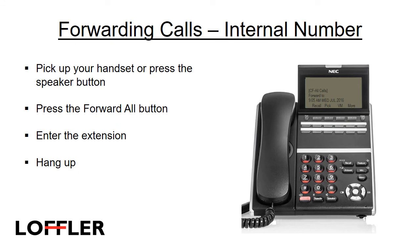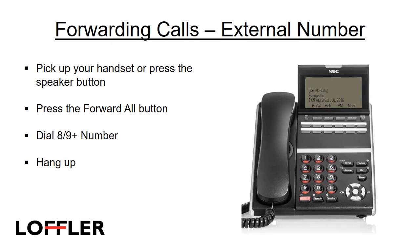To forward calls to another extension, pick up your handset or press the speaker button, press the forward all programmed button, enter the extension, and hang up. To forward your calls to an external number, pick up your handset or press the speaker button, press the programmed forward all button, dial the trunk access code — 8 or 9 — and then the number, and hang up.